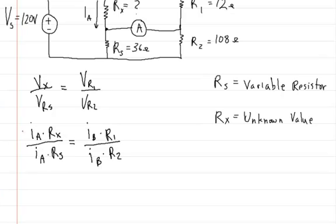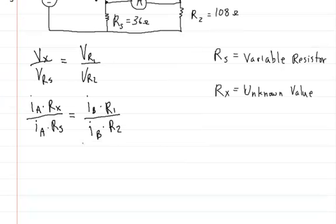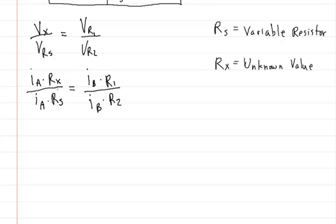So as we noticed before, the currents cancel out on both of these. So that can be rewritten as Rx divided by Rs is equal to R1 divided by R2.